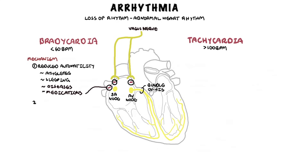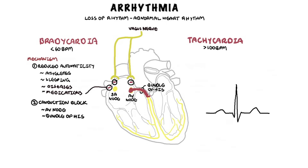The second mechanism of bradycardia or bradyarrhythmias is a conduction block — blockage anywhere along the conduction system of the heart. A good example is conduction block affecting the atrioventricular node and bundle of His, which can affect the PR interval on the ECG. Blockage of the AV node or the bundle of His will cause a prolonged PR interval of some kind, which manifests as a heart block on ECG.